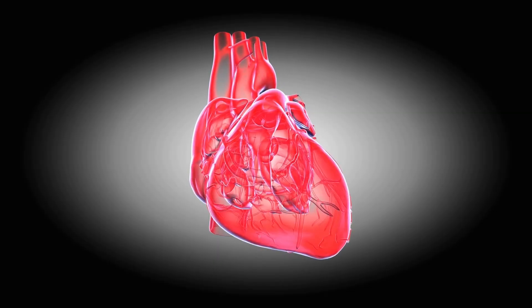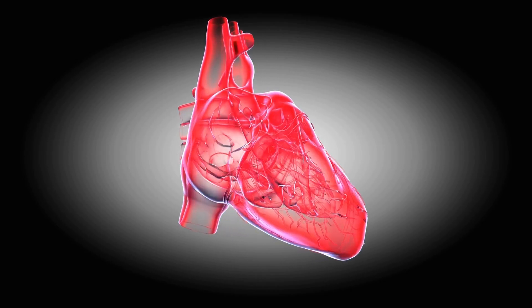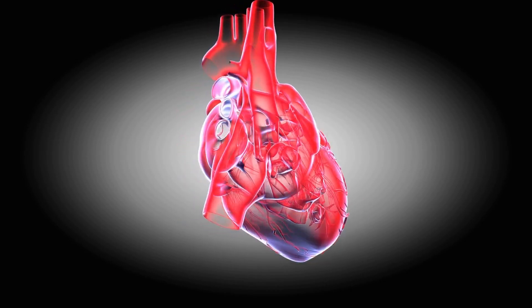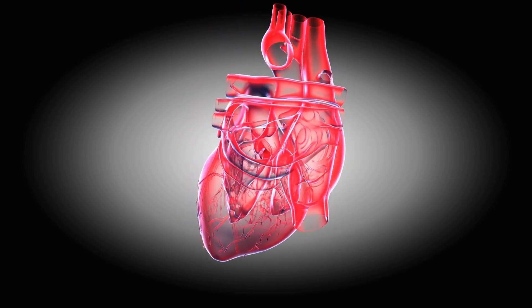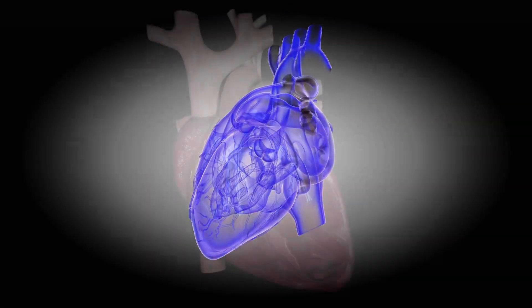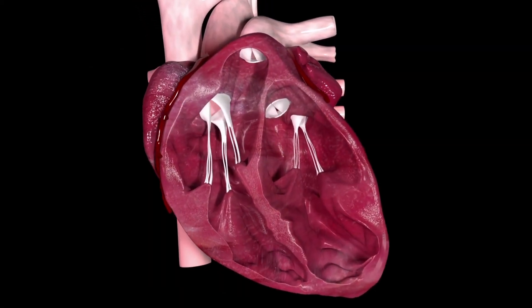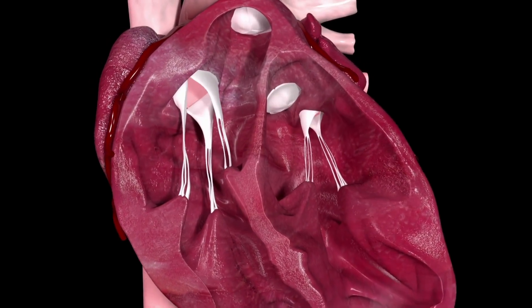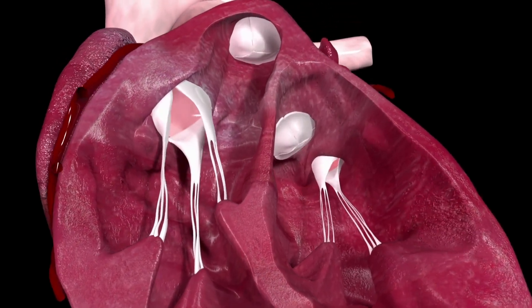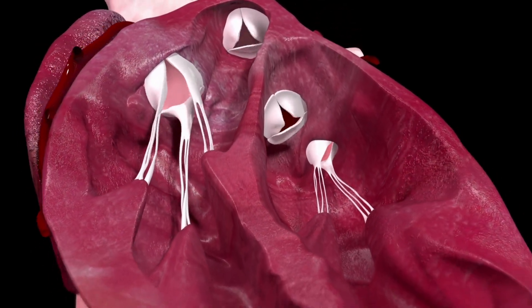Cardiac arrest happens when the heart's electrical system, which controls heart rhythm, suddenly stops working. Due to this malfunction, abnormal heart rhythms called arrhythmias occur, which might eventually cause the heart muscle to stop working altogether — that is called cardiac arrest. Diabetes is linked to cardiac arrest; however, the underlying causes of this link are unclear.